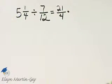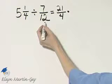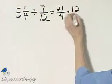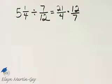And this is divided by 7 over 12. So at the same time, I'll write this as multiplied by the reciprocal of this fraction, 12 over 7.